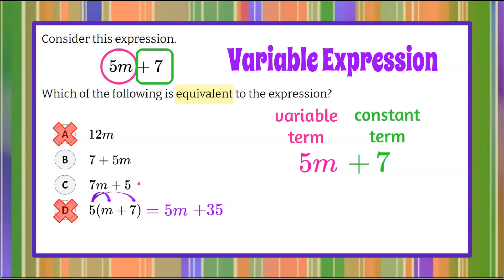Now we have these two answer choices to pick from. We can see here they have 7m instead of 5m so we can eliminate answer choice C.